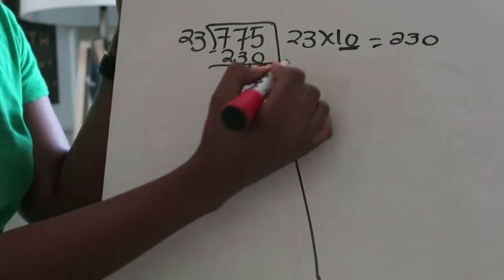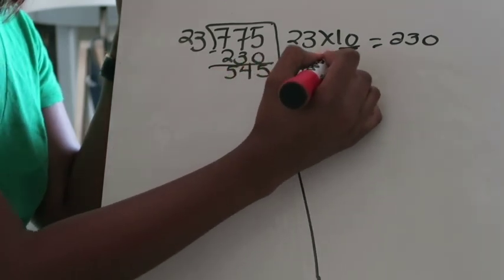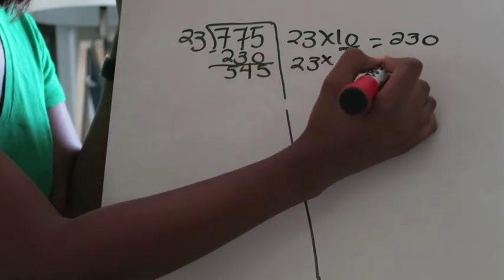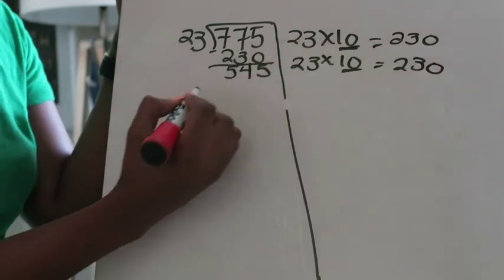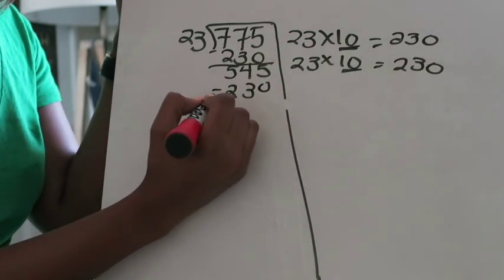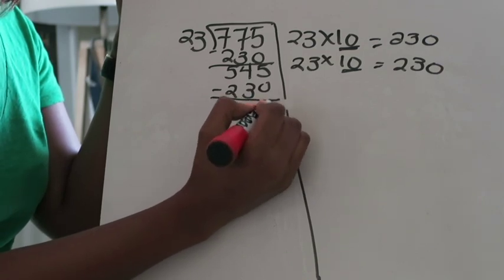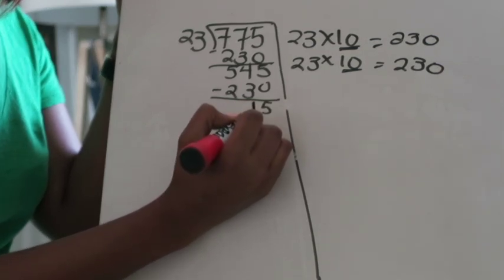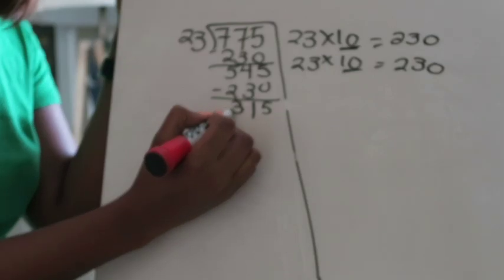I'm going to multiply 23 times 10 again. Underline that 10. That's 230. Subtract 230 from that. 5 minus 0 is 5, 4 minus 3 is 1, and 5 minus 2 is 3.